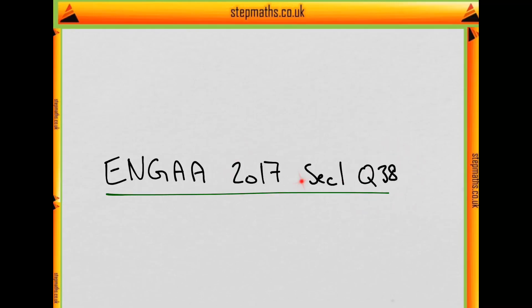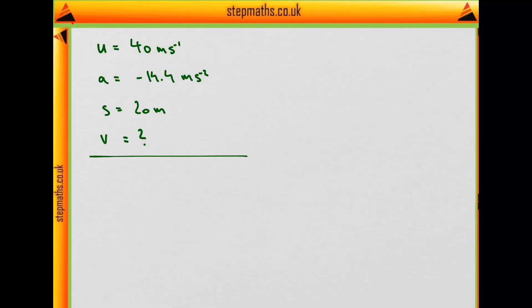This is question 38 from the 2017 exam. So in this question, an object is initially moving at 40 meters per second in a straight line.